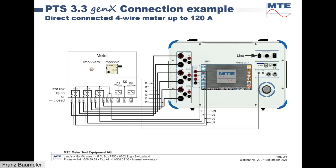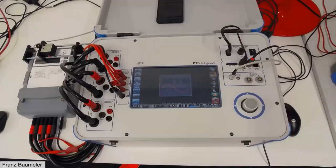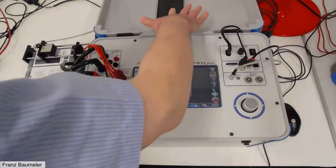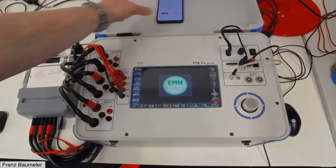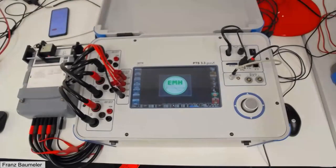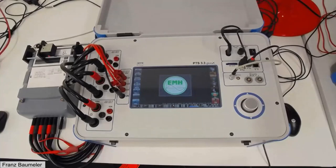Now let me change to the live view. Here you can see the real setup: the PTS 3.3 Genetics, and on the left side the meter connected with high current cables. The PTS 3.3 Genetics is a so-called portable test system, which is a combination of a three-phase four-wire current source and a three-phase four-wire reference standard class 0.05, and there is also an error evaluation system integrated with two independent impulse inputs.